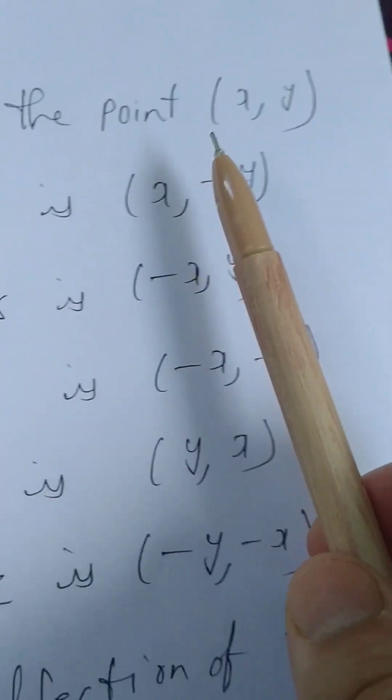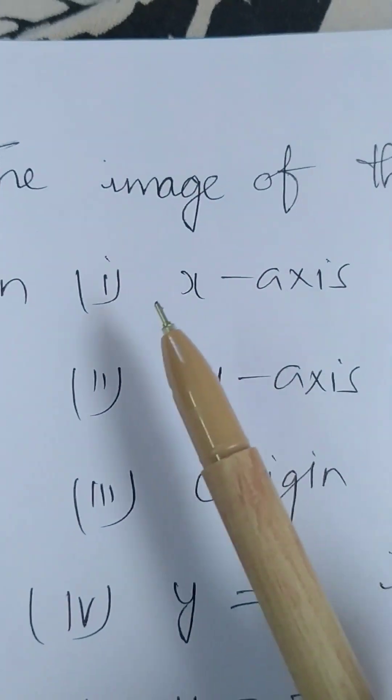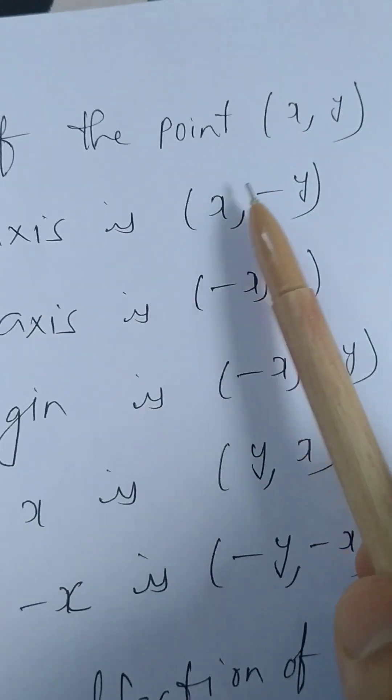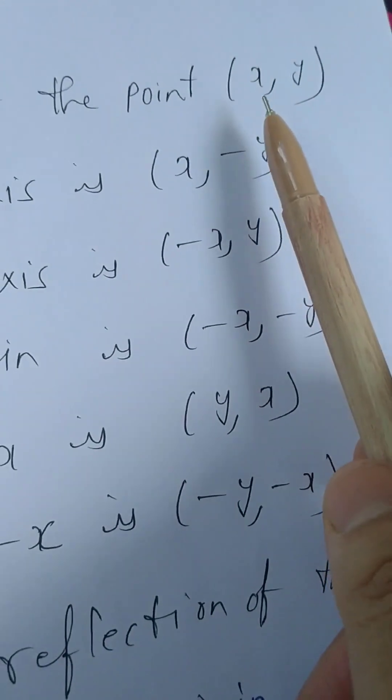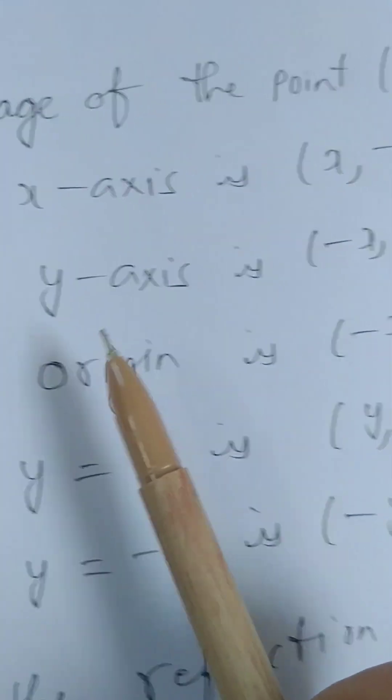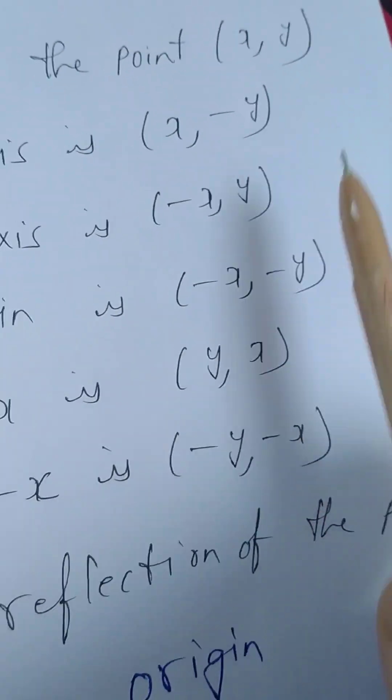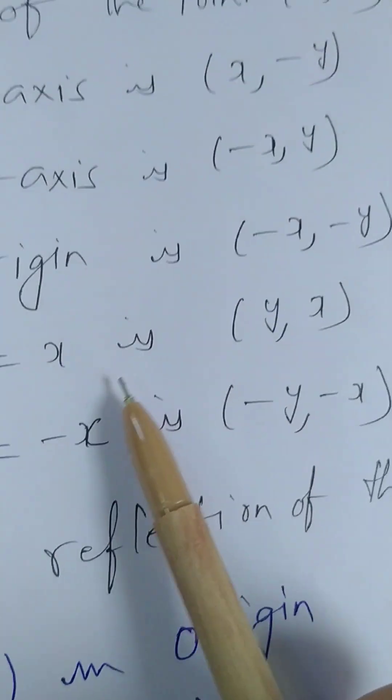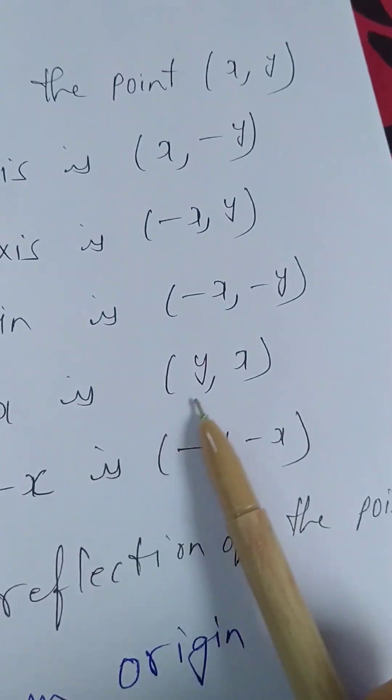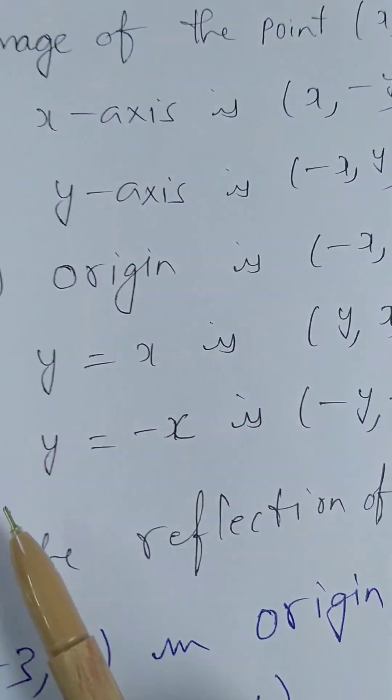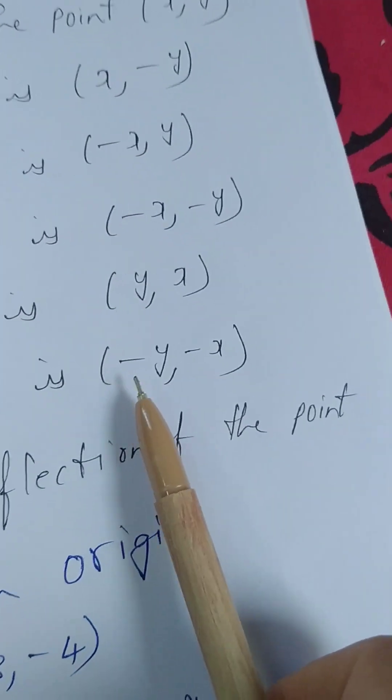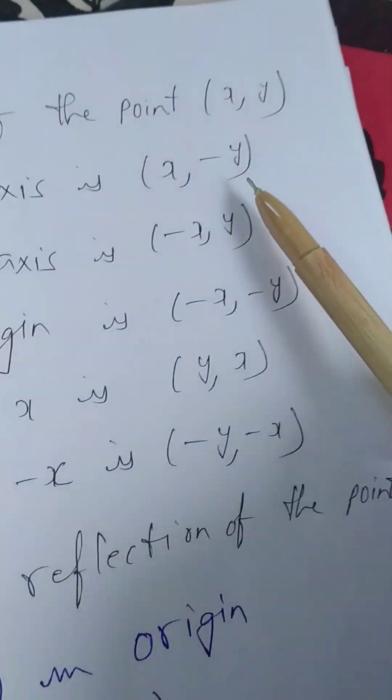The image of the point (x, y) in x-axis will be (x, -y). Remember this. In y-axis it will be (-x, y). Origin, it is (-x, -y). And y equals x, it will get reversed - x and y will replace their places. Y equals minus x, then it will be (-y, -x). Remember these results.